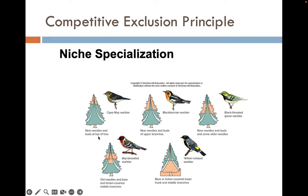The Cape May warbler breeds at the very top of the trees, using areas with new needles and buds. The Blackburnian warbler uses a greater fraction of the tree and takes advantage of the branches. The middle half is utilized by black-throated green warblers. Bay-breasted warblers capitalize on deeper branches in the middle that black-throated warblers can't access, and the yellow-rumped warbler uses the bottom half. So even though all five species may nest in the same tree, they're not using the same parts.